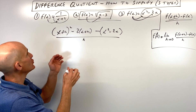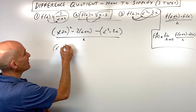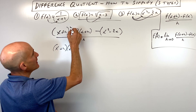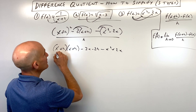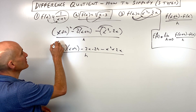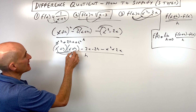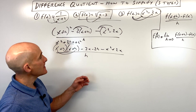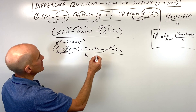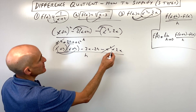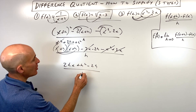Don't just square both terms — foil x plus h squared as x plus h times x plus h. Distribute the negative two: negative two x minus two h. Distribute the negative into f of x: negative x squared plus two x, all divided by h. Multiplying out gives x squared plus two hx plus h squared. The x squared terms cancel, the two x and negative two x cancel, leaving two hx plus h squared minus two h, all divided by h.